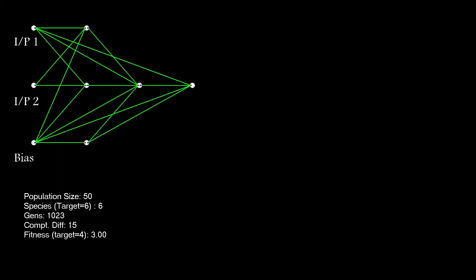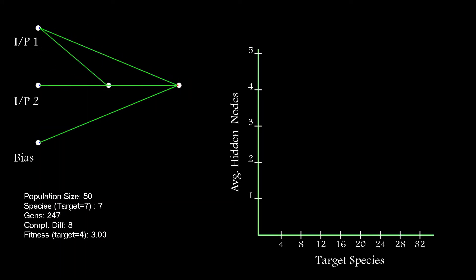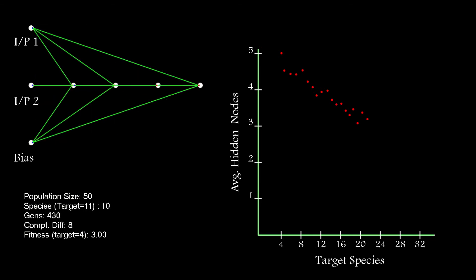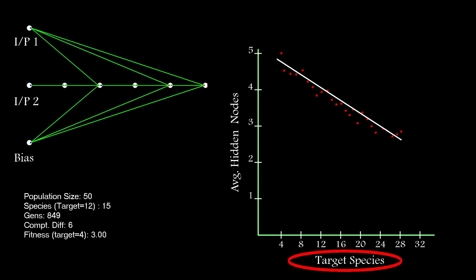I got this set up to find the exclusive OR solution a thousand times and worked out the average number of hidden nodes in the solutions. I then repeated this for a species target of five, then six, seven, and so on, and plotted them on a graph. I think you'll agree there's clearly a downward trend in the solution complexity as a function of hidden nodes required as we increase the target number of species in each generation.